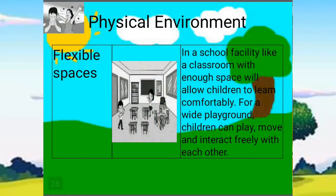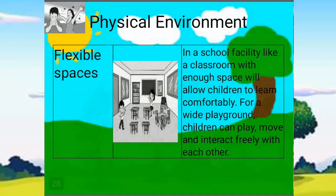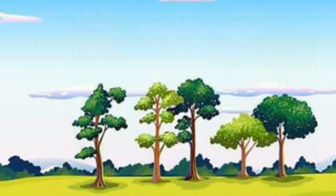Lastly is flexible spaces. A school facility like a classroom with enough space will allow children to learn comfortably. For a wide playground, children can play, move, and interact freely with each other.